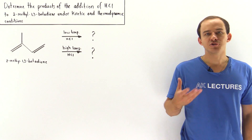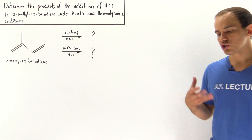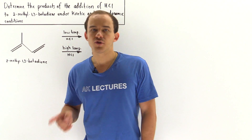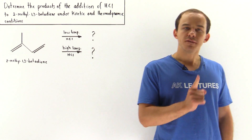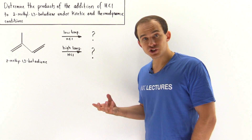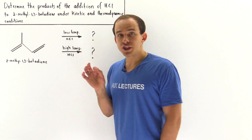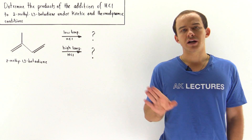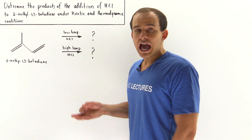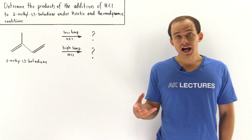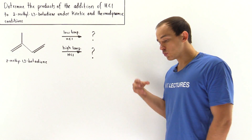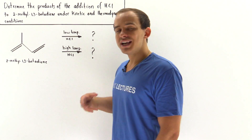Whenever conjugated molecules — conjugated 1,3-dienes — undergo addition reactions, two types of products can form: the 1,2-addition product and the 1,4-addition product. Depending on the type of conditions the reaction is under, that determines the type of product formed. Under low temperature conditions with insufficient time, the 1,2-addition product is formed and the reaction is said to be under kinetic control.